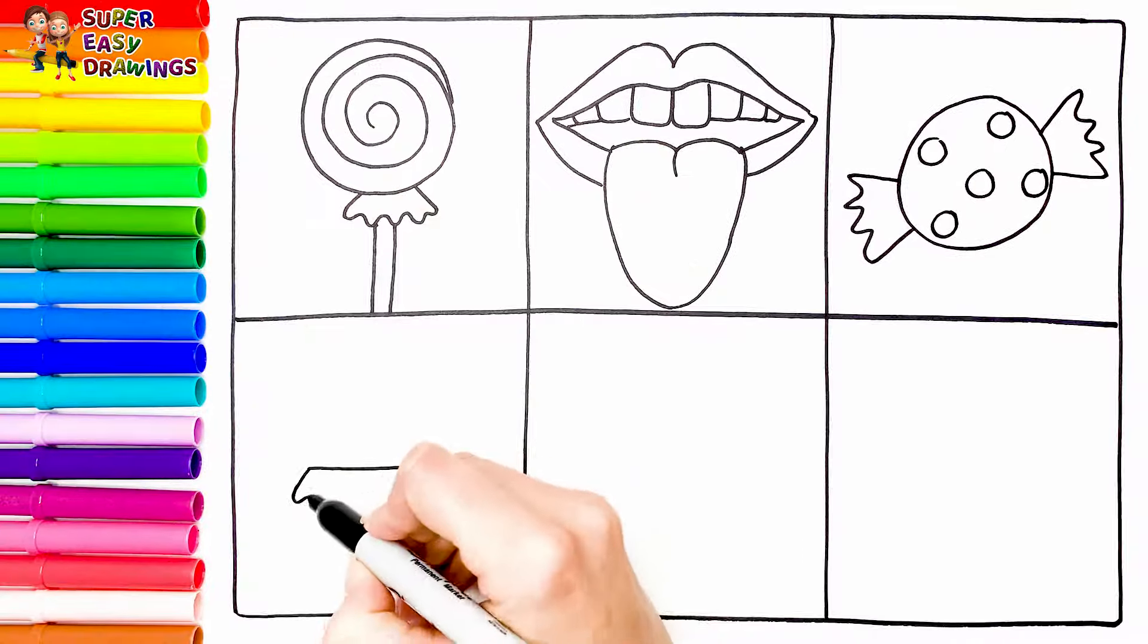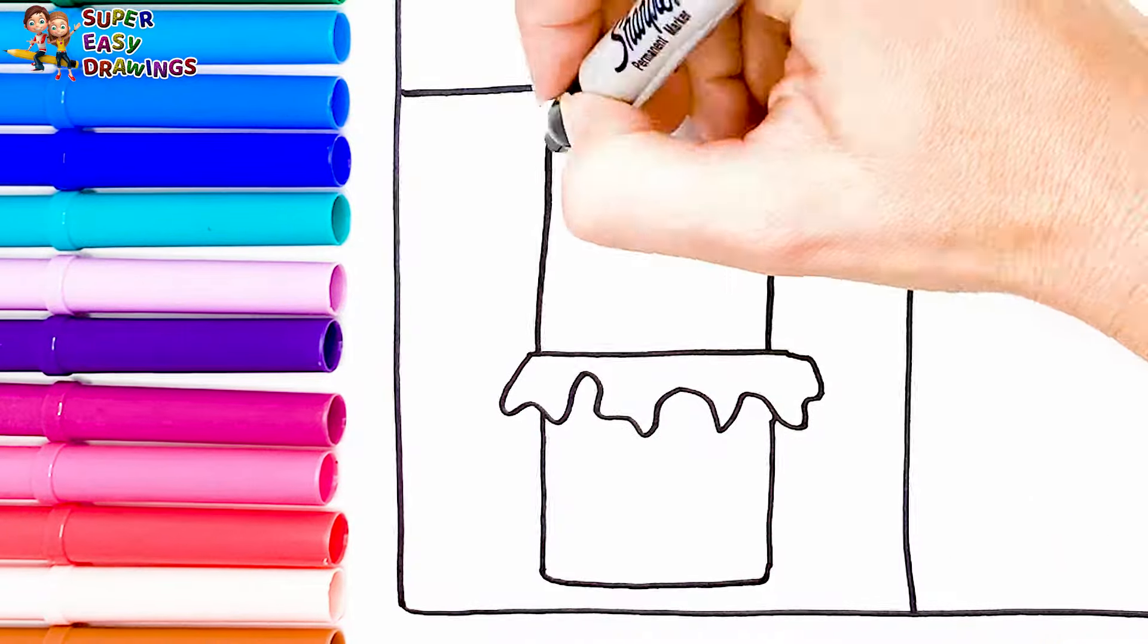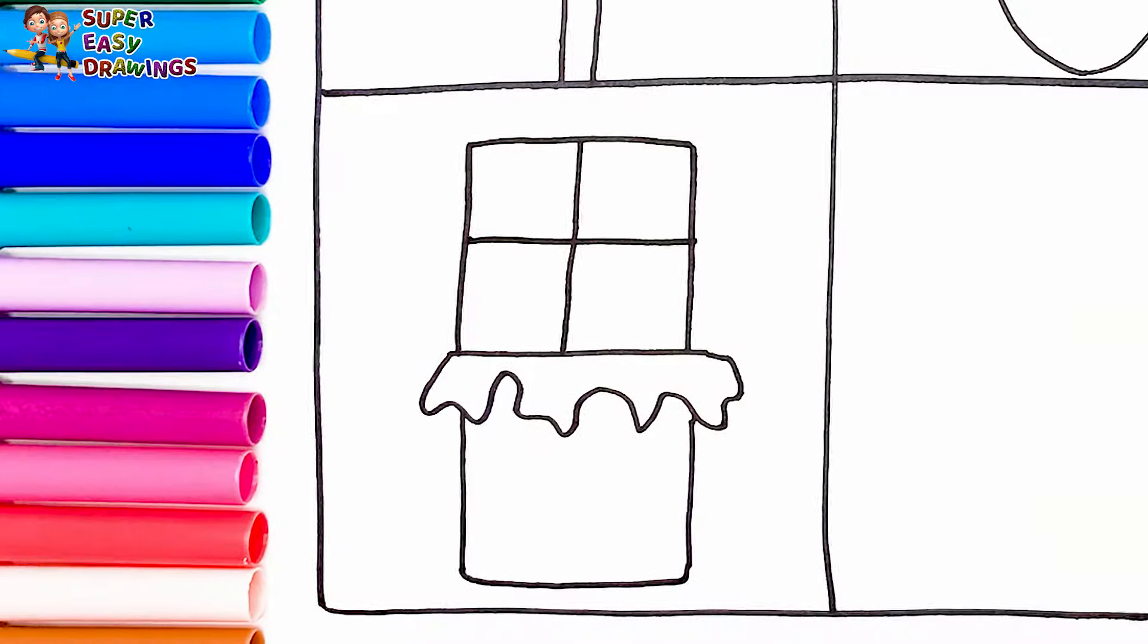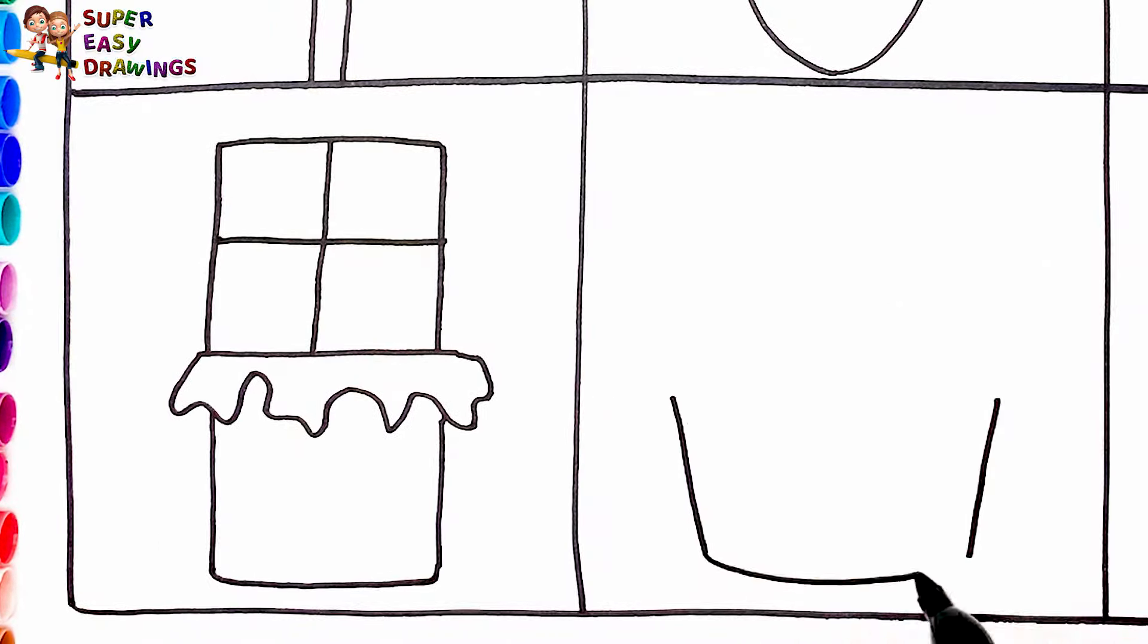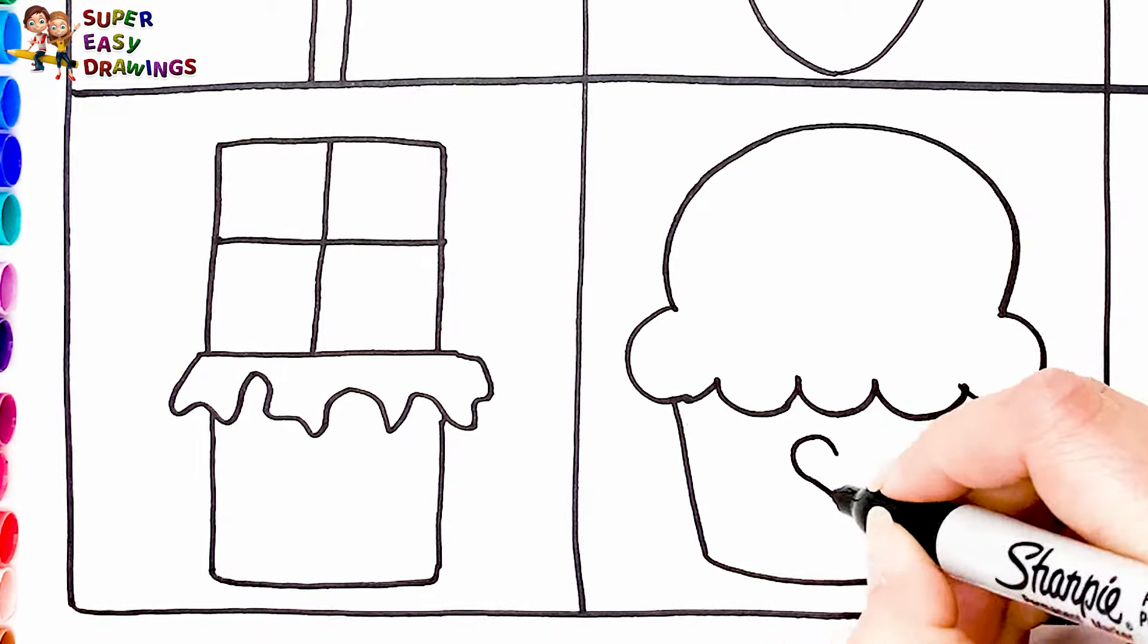In the next square, I draw a bar of chocolate. Then I draw a yummy cupcake in the next one with some hearts on it.